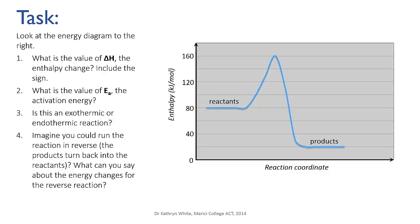Here's your task for this video. I've drawn an energy diagram on an actual numbered scale with values for the enthalpies. First, work out the value of delta H, the enthalpy change for the reaction. Then work out the value of the activation energy. Tell me whether it's an exothermic or endothermic reaction. Finally, imagine running the reaction in reverse — starting at the products and going back to the reactants — and describe the energy changes for that reverse reaction.